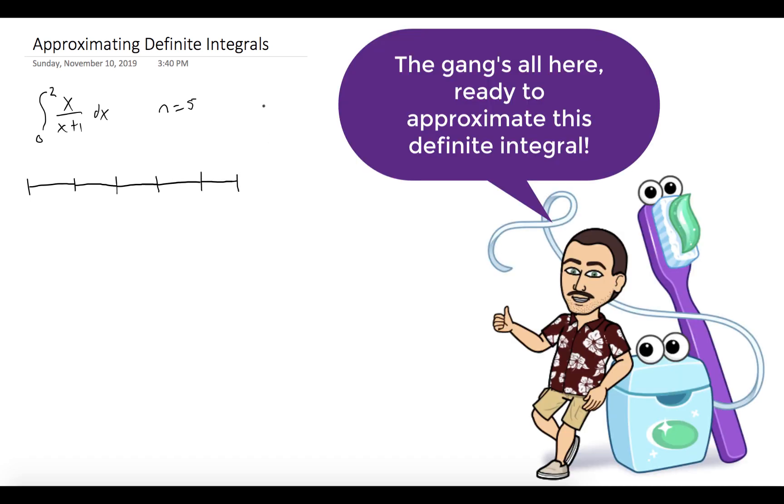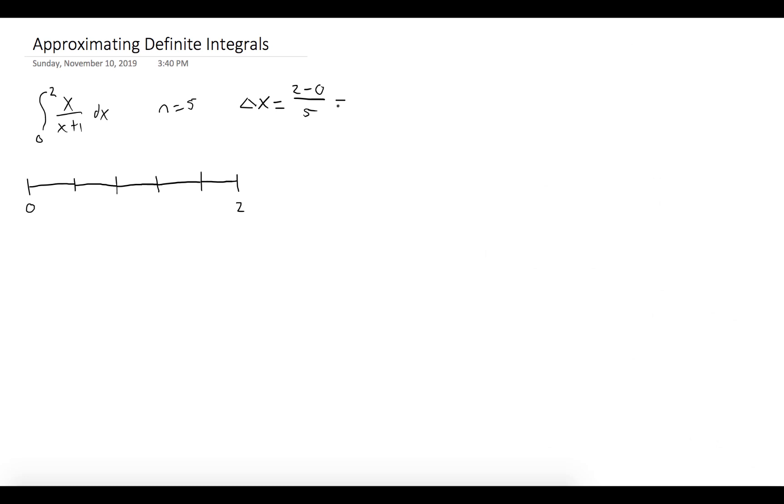So we could start by writing down our integral. It's the integral from zero to two of x over x plus one dx. Our number of rectangles is five, so we'll take our interval and break it up into five subintervals. The left endpoint is zero and the right endpoint is two. So delta x equals two minus zero over the number of rectangles, which is five, which is 0.4.